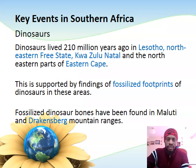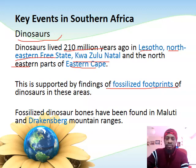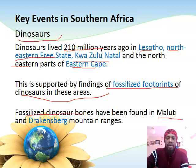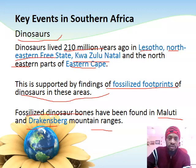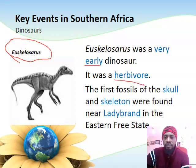Dinosaurs are believed to have lived about 210 million years ago, mainly in Lesotho, northeastern Free State, KwaZulu-Natal, and the northeastern part of the Eastern Cape, supported by fossilized footprints found in these areas. Fossilized bones have also been found in the Maluti and Drakensberg mountain ranges. One example is Euskelosaurus, an early herbivorous dinosaur whose first skull and skeleton fossils were found in Ladybrand in the eastern Free State.